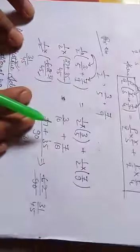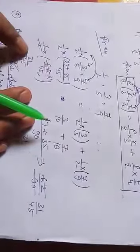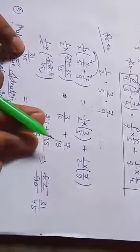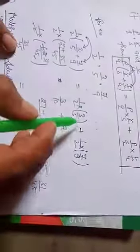If we solve it, it will be 31 upon 45. Now, we have distributive property. Let's distribute it.